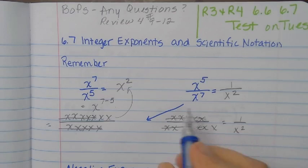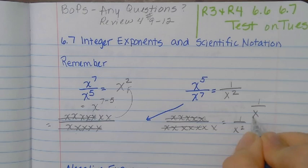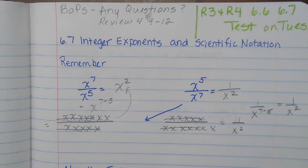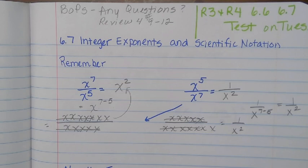For this one we would do one over x, then seven minus five, because our denominator is larger — that's how we got the x squared in the denominator. We just put our subtraction wherever the largest exponent is; that helps us get it in the right spot.